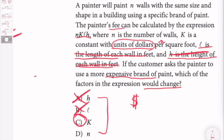So the answer is C, and D is N, which is - N is the number of walls. The number of walls is not going to change if we use a more expensive brand of paint.